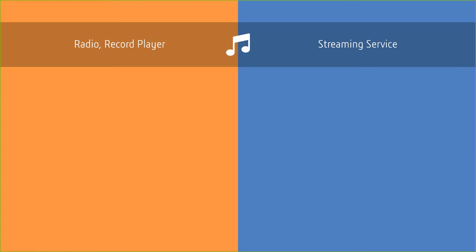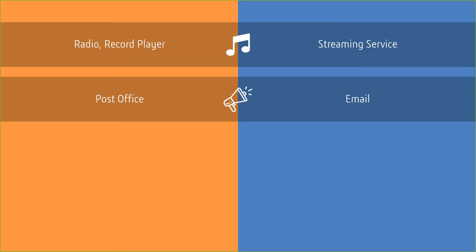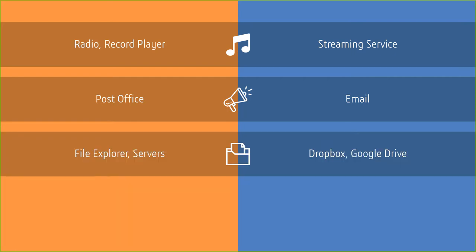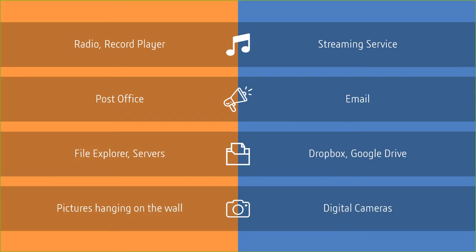The next one is easy — what do you use for communication? You probably avoid the post office like the plague and instead use Gmail, Hangouts, Teams, texts, and things like that. How about storage? Dropbox, Google Drive. Where do you store pictures? Amazon Photos, Google Photos.